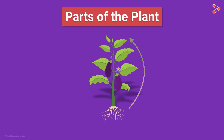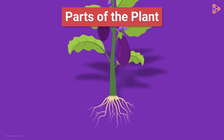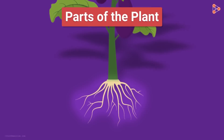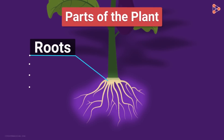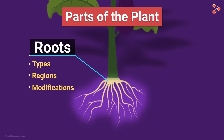Let's start our understanding of the roots first. There are three major areas of study that we need to carry out: first is the type of roots, second is the various regions or the parts of the roots, and lastly we will study the various modifications of the roots.